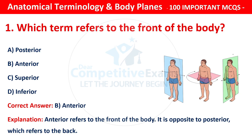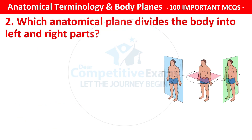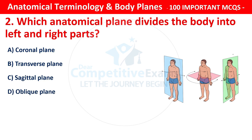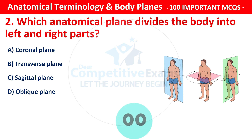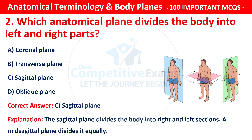Question number 2: Which anatomical plane divides the body into left and right parts? Options are: coronal plane, transverse plane, sagittal plane, or oblique plane. The correct answer is C — that is sagittal. The sagittal plane divides the body into right and left sections. The mid-sagittal plane divides it equally.